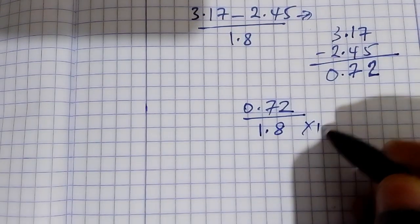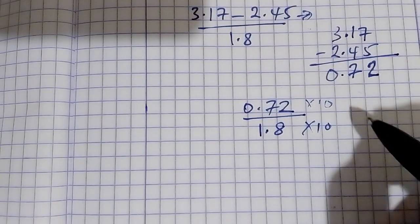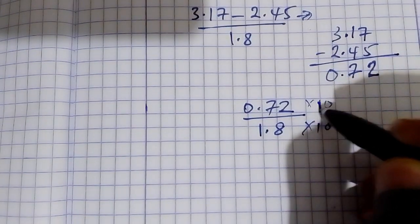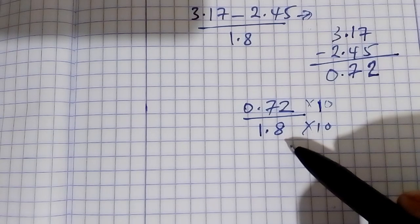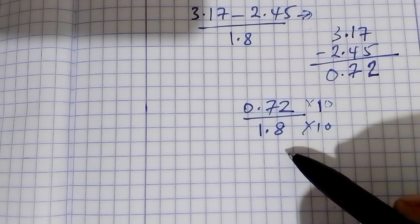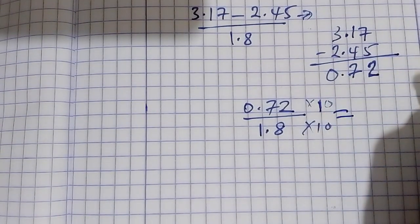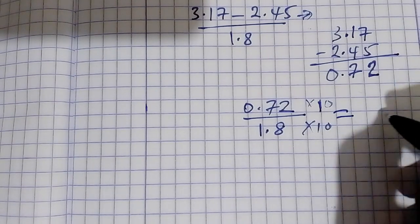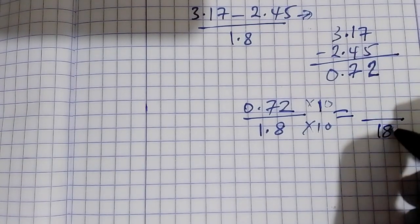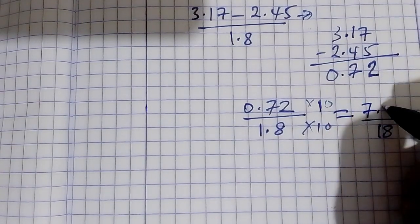We multiply by 10 here. We want to remain with a denominator which is not having a decimal point, so this is giving us 18 and 7.2.